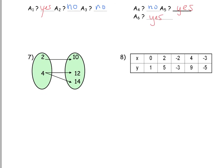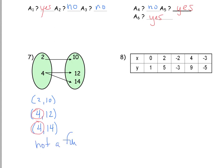The last two examples. In the mapping diagram using arrows, if written as points we'd have (2,10), (4,12), and (4,14). Notice that for x=4 there are two values of y — that's an issue, so no, not a function. The last example is a table of values with x values 0, 2, -2, 4, and -3. There are no repeated values of x, therefore yes, it is a function.